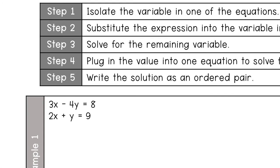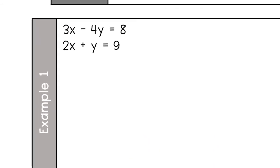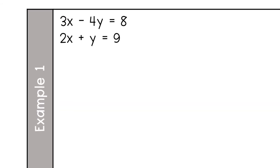Step one says to isolate the variable in one of the equations, so I'm going to pick an equation and get one of the letters by itself. The easiest thing to do is look to see if any variables have a coefficient of one. I'll number these: equation one and equation two. In equation two, see how y doesn't have a number in front of it — no coefficient — so that's the easiest variable to isolate.